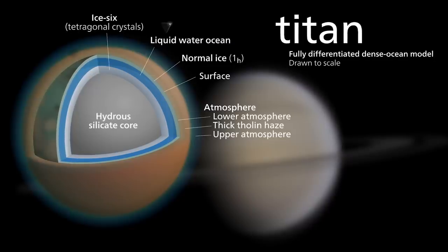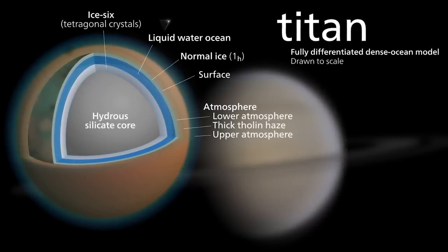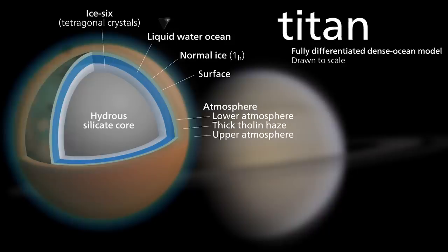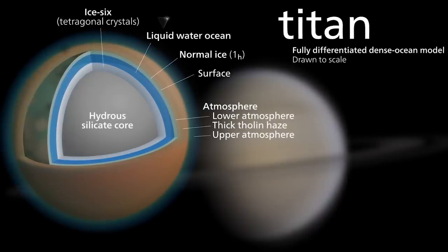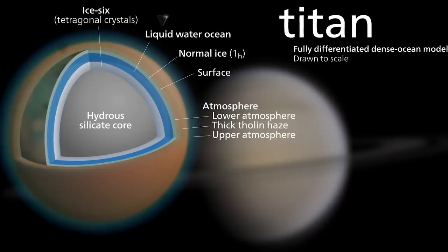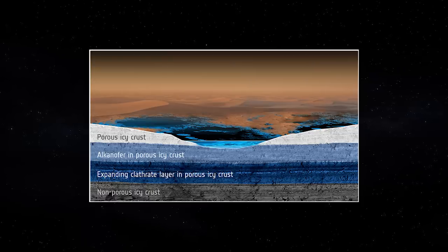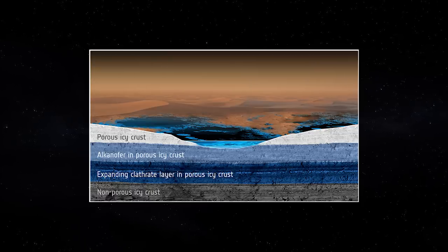Composed of half water ice and half rocky material, Titan has a bulk density of 1.88 grams per centimeter cubed. Its hydrosilicate core is about 3400 kilometers in diameter. Surrounding the core are several layers of different crystalline forms of ice.